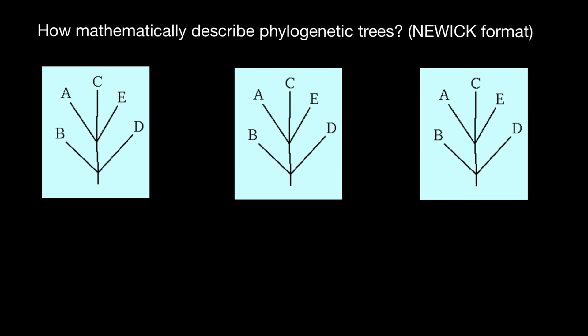It is very, very simple. Take a look. For example, we have a group here of three species A, C, and E. So we write them down as follows: A, C, E, and put them in parentheses.